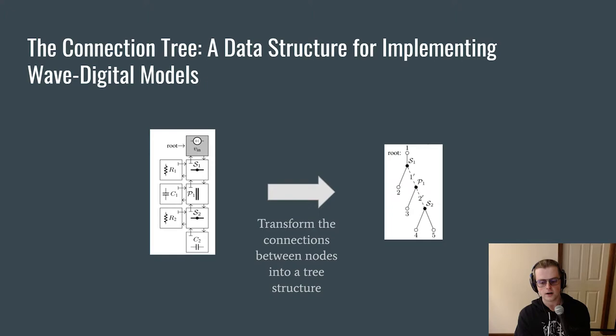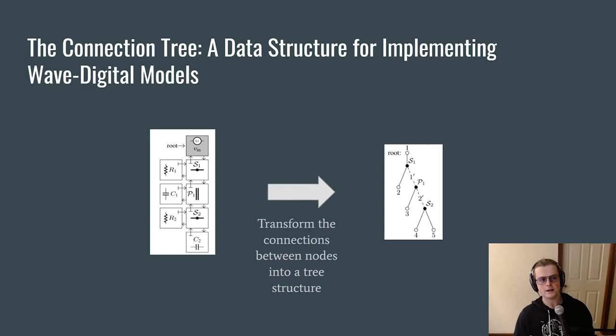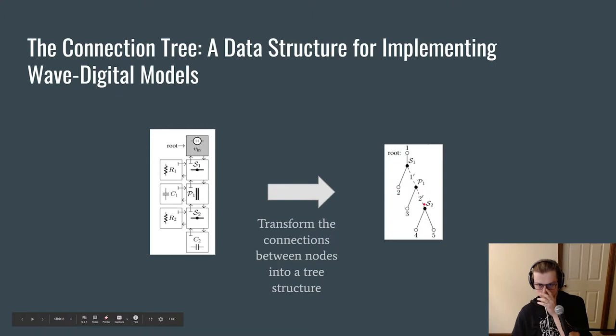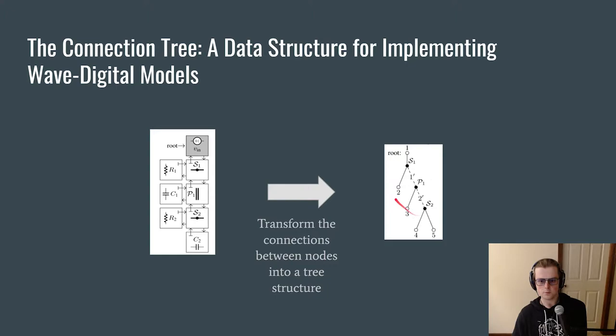The connection tree data structure also has an associated derivation. It's how the wave digital model is represented such that it may be computed easily. The wave digital model looks the way it does because it directly corresponds to the connection tree, where we denote a specific node as our root, then have internal adapters denoting the connections, and leaf nodes and the root denoting components. For example, node 2 corresponds to R1.